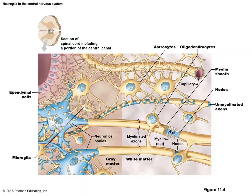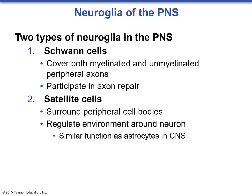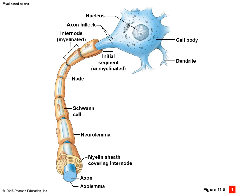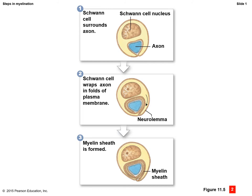In the peripheral nervous system, there are two types of glial cells: Schwann cells and satellite cells. Satellite cells surround peripheral neuron cell bodies and regulate the environment around neurons — essentially the astrocytes of the PNS. Schwann cells are like the oligodendrocytes of the peripheral nervous system; they cover both myelinated and unmyelinated axons, produce myelin, and also participate in axon repair. The Schwann cell nucleus wraps around the axon, rolling over itself like a jelly roll to create the myelin sheath.